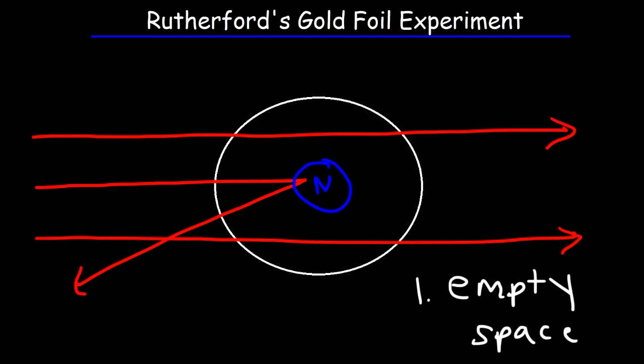The second thing that he realized is that some of the alpha particles were deflected at large angles. Remember, the alpha particle consists of two protons and two neutrons, so the alpha particle has a plus two charge.